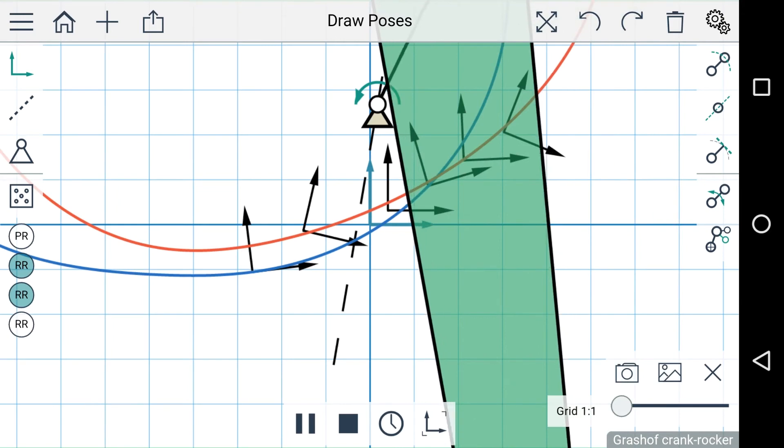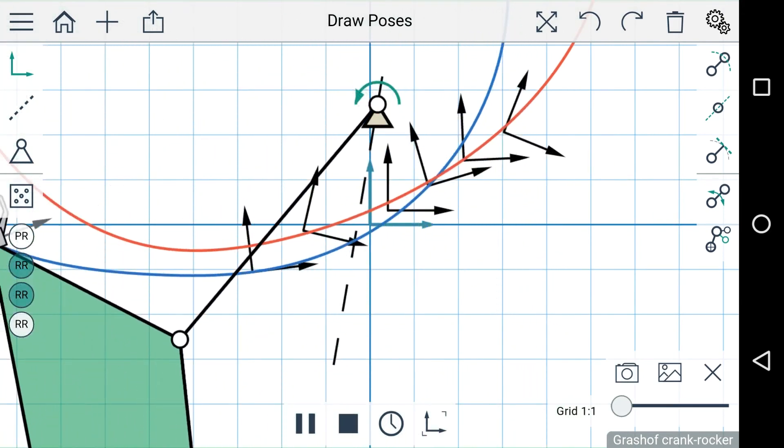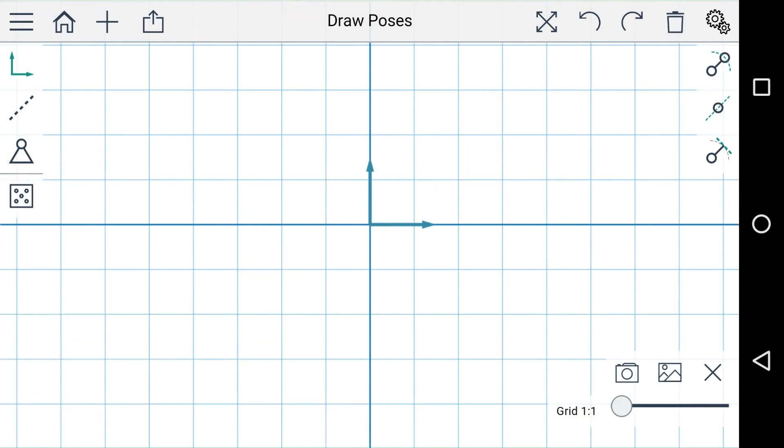So that's four position synthesis but we can also synthesize a mechanism using three positions. I'm going to delete this linkage. So I'll add three poses here and since we need five total constraints we need to add two more and these will be point constraints.